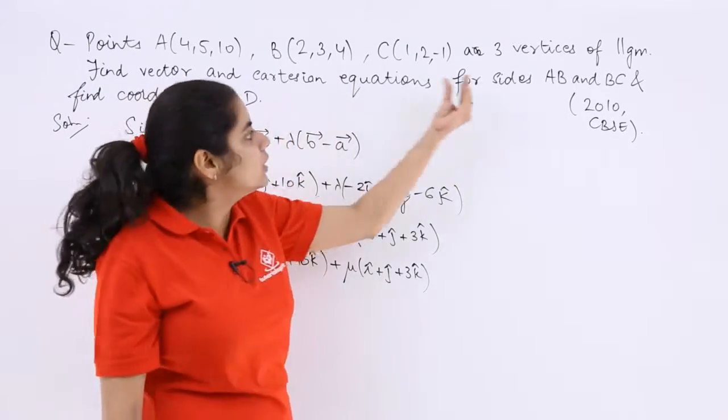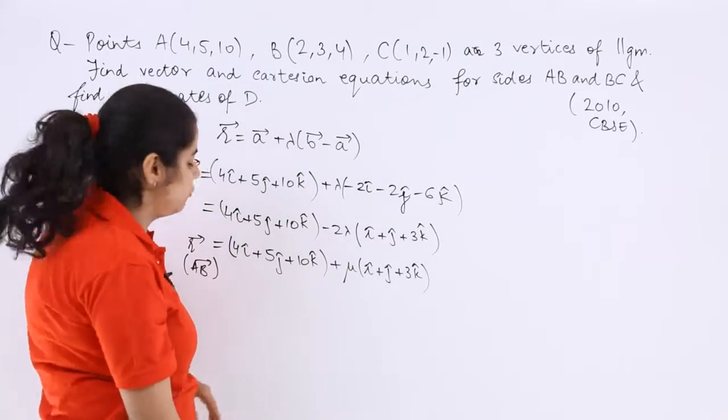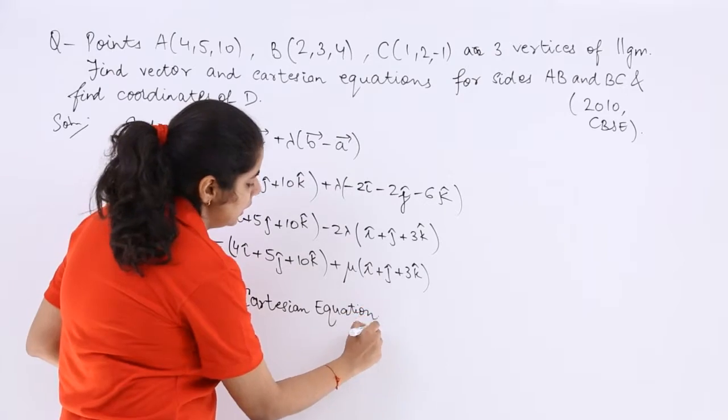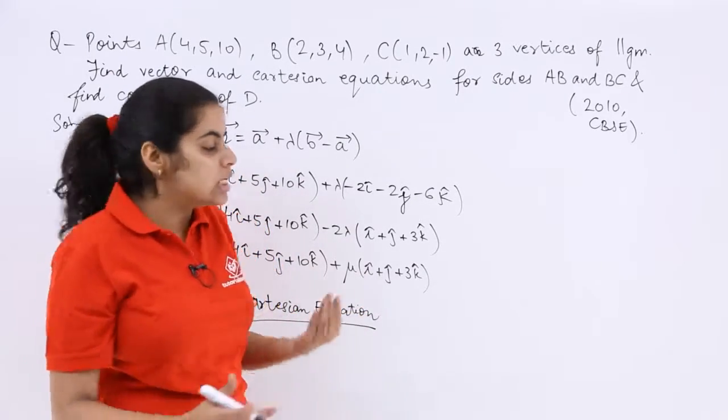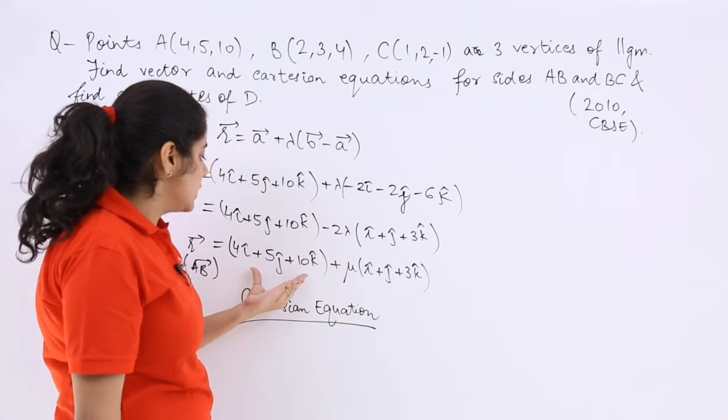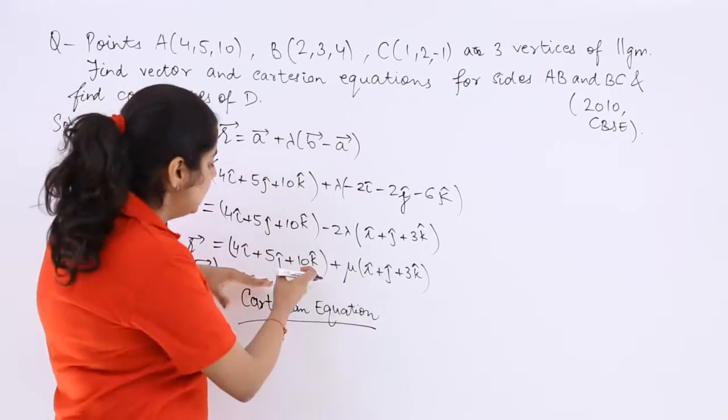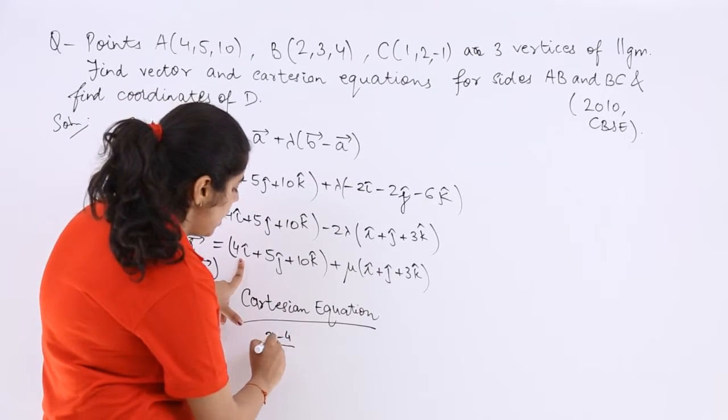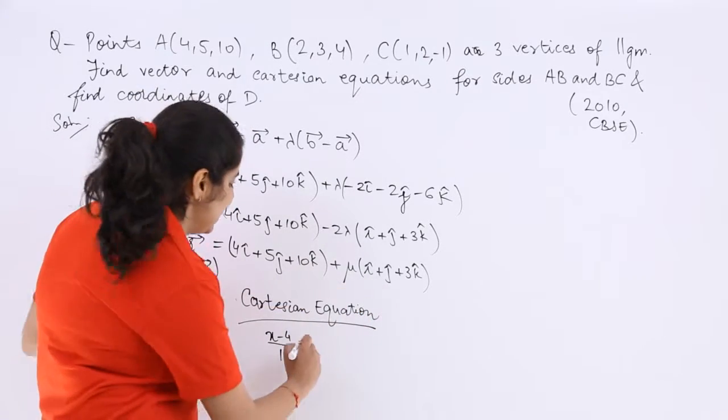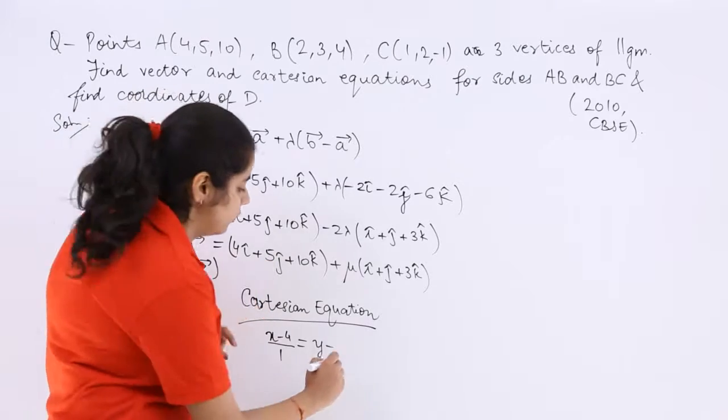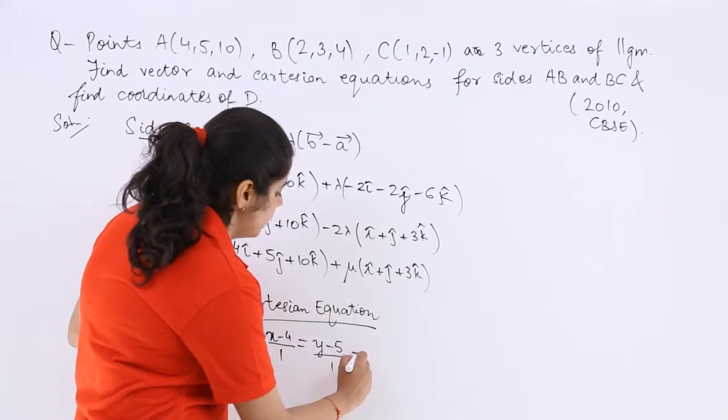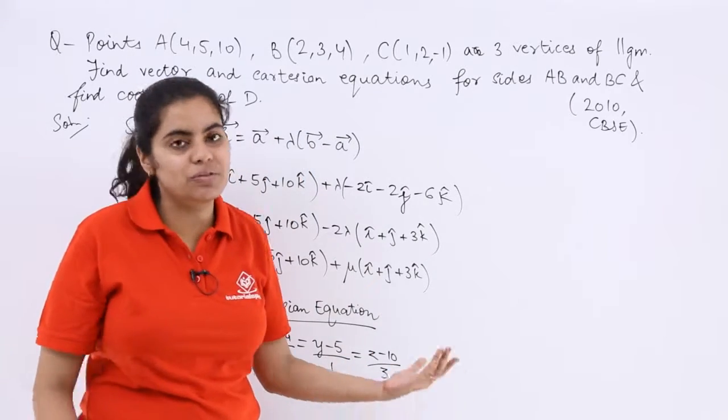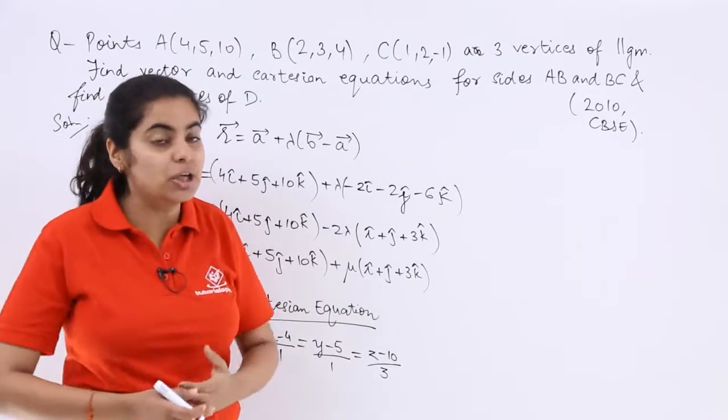Now the second should be the Cartesian equation for AB. So for Cartesian equation, there is a topic in your NCERT books mentioned about the conversion of vector equation to Cartesian. Take the first thing. So it should be x minus x1 upon A. So x minus 4 upon 1 equals y minus 5 upon 1 equals z minus 10 upon 3. So this is the Cartesian equation which is very simple. We have found out the vector and Cartesian equation for the sides AB.